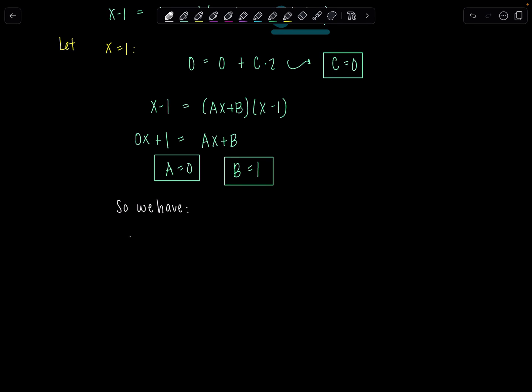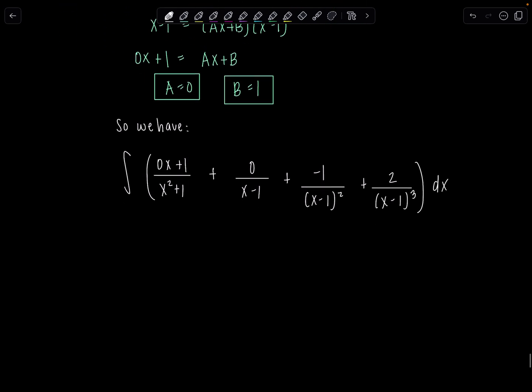What are we going to integrate now? So we have integral of ax plus b over x squared plus 1 plus c over x minus 1 plus d over x minus 1 squared plus e over x minus 1 cubed dx. So let's clean up. What are we really integrating? 1 over x squared plus 1. That's just tan inverse of x. Perfect. This guy is a 0. It's gone. Then I have negative 1 over x minus 1 squared. I'm going to write it as negative x minus 1 to the negative second. And then plus 2 times x minus 1 to the negative third dx.